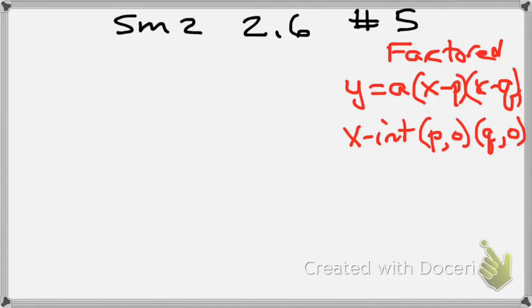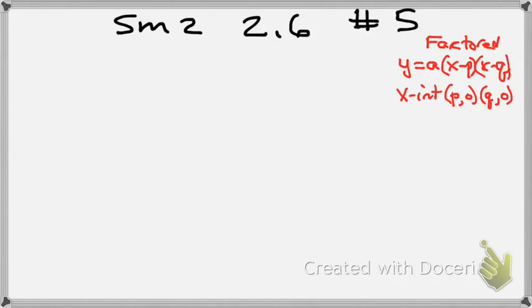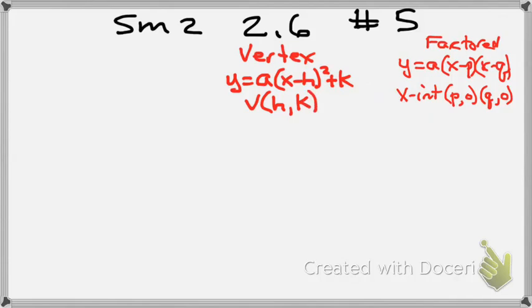Now the next form we're going to talk about is vertex form. Vertex form is when we have y equals a times x minus h squared plus k. Out of vertex form, the cool thing is we know what the vertex is. The vertex is going to be (h,k), and that is really helpful.